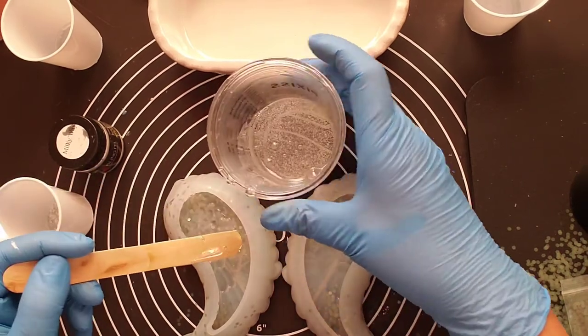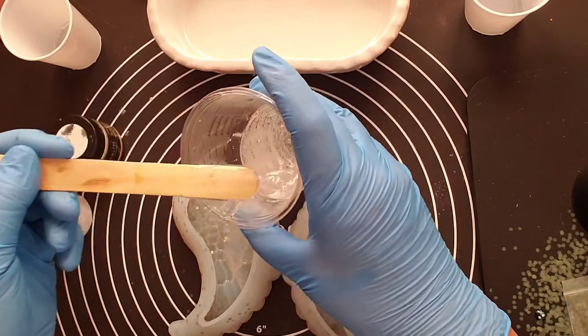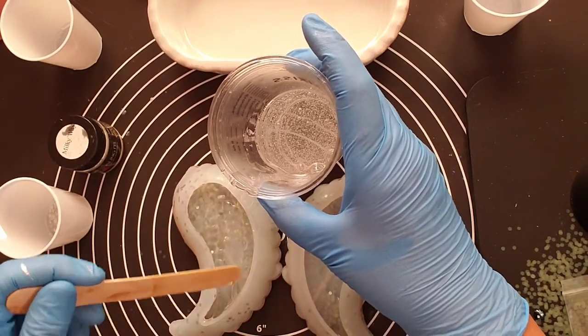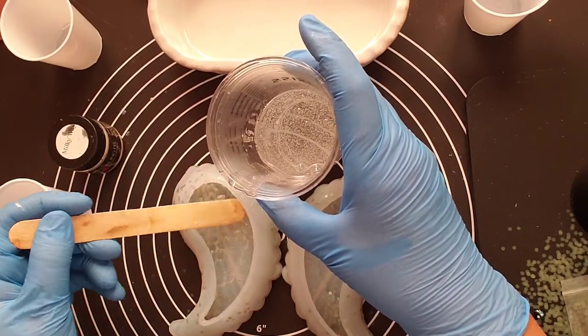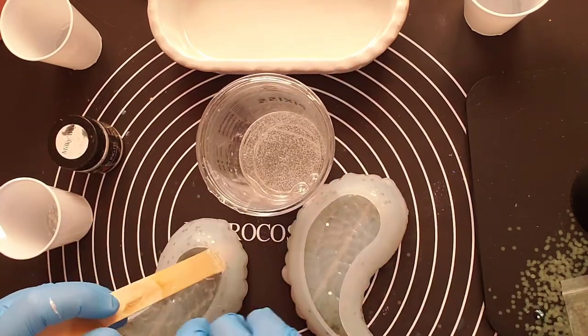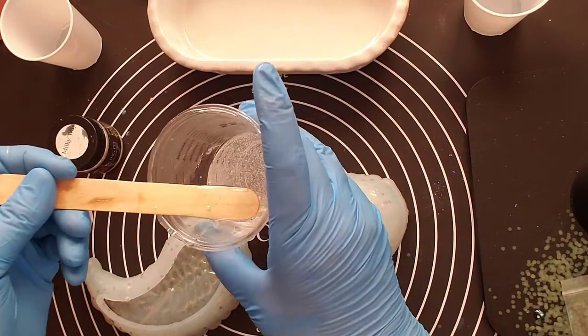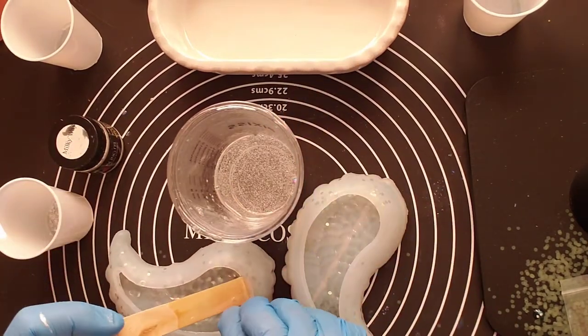I'm using my popsicle stick to incorporate some of the resin down inside the sidewalls of the mold, but eventually you'll see that I'm just going to go ahead and pour it in and it worked out real well.